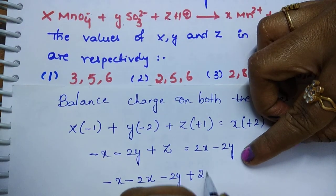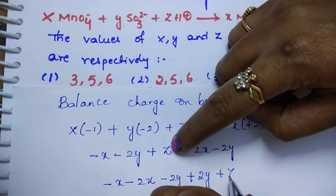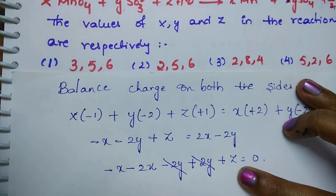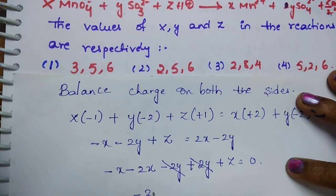Minus 2y plus 2y gets cancelled. Then -x - 2x is -3x, plus z is equal to 0. You got the relation, right? What you do is just substitute these options in this relation and find which relation gives you this value.